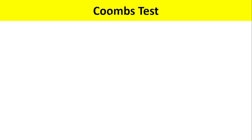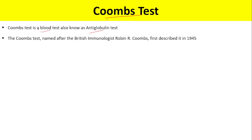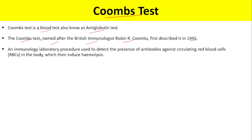In this lecture, I'm going to talk about the Coombs test. The Coombs test is a blood test that is also known as the anti-globulin test. It is named after the British immunologist Robin R. Coombs, and this test was first described in the year 1945.